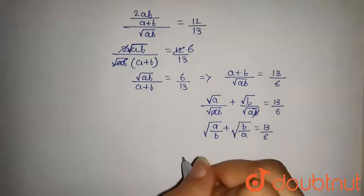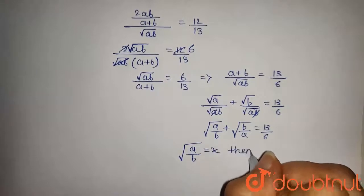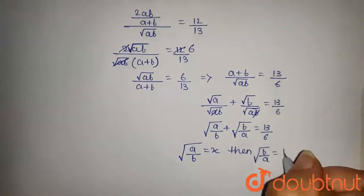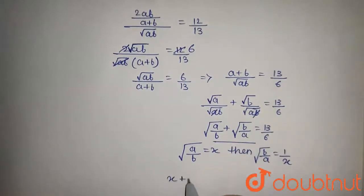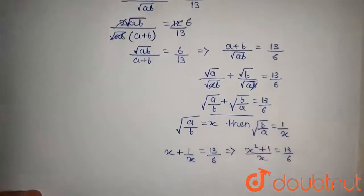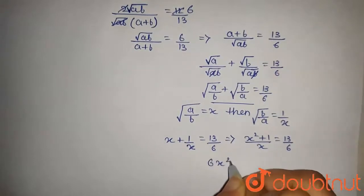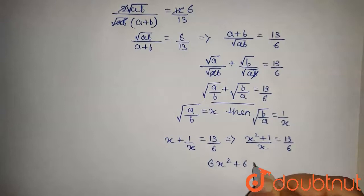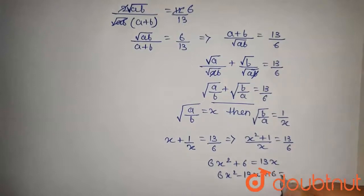We will put under root A by B is equal to X, then we will have under root B by A will be equal to 1 by X. Putting this in this equation we get X plus 1 by X is equal to 13 by 6, or this will be X squared plus 1 upon X is equal to 13 by 6. On solving this, we get the quadratic equation 6X squared plus 6 is equal to 13X, or this will be 6X squared minus 13X plus 6 equals to 0.